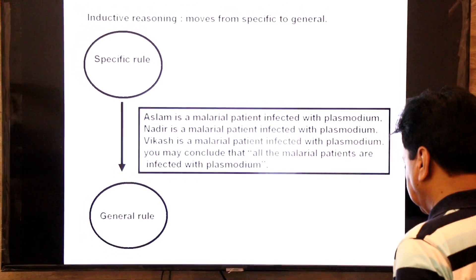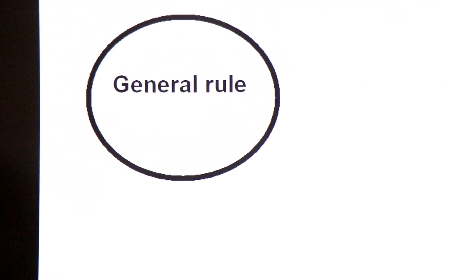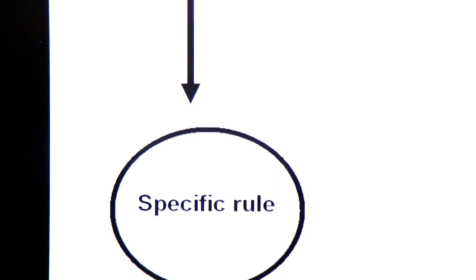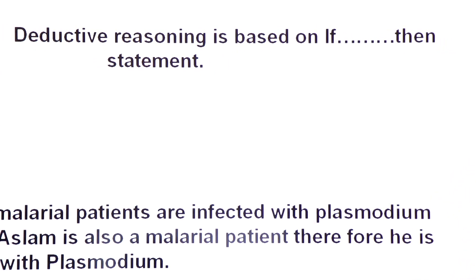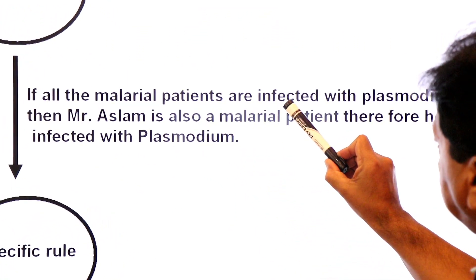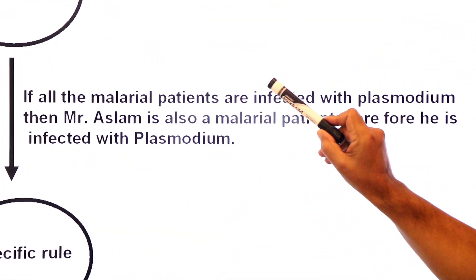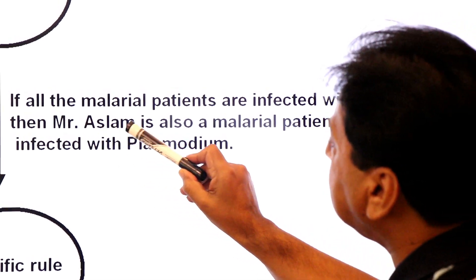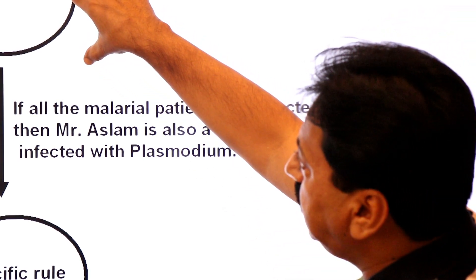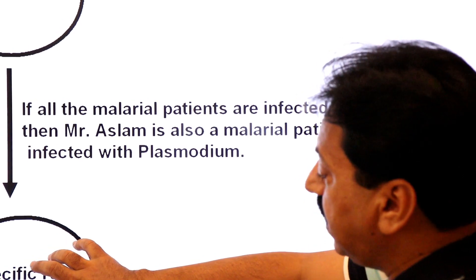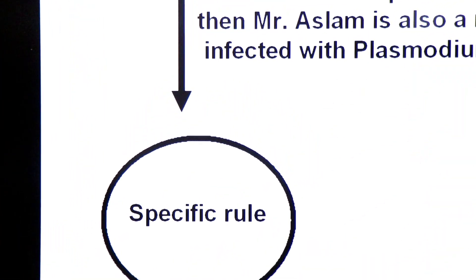Now we change it to deductive reasoning. Deductive reasoning moves from general to specific, and it is based on if-and-then statements. General rule: if all malarial patients are infected with plasmodium, and Mr. Aslam is a malarial patient, then he is infected with plasmodium. When we apply the general rule to one specific patient, that is deductive reasoning. This is called deductive reasoning.